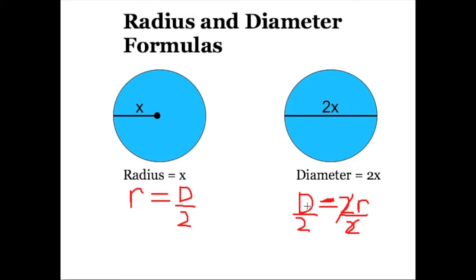So the radius is equal to half the diameter, and the diameter is equal to twice the radius. These are the formulas you can use for any kind of calculations — D equals 2r, and r equals D divided by 2. You can either memorize these formulas or simply remember the concept.